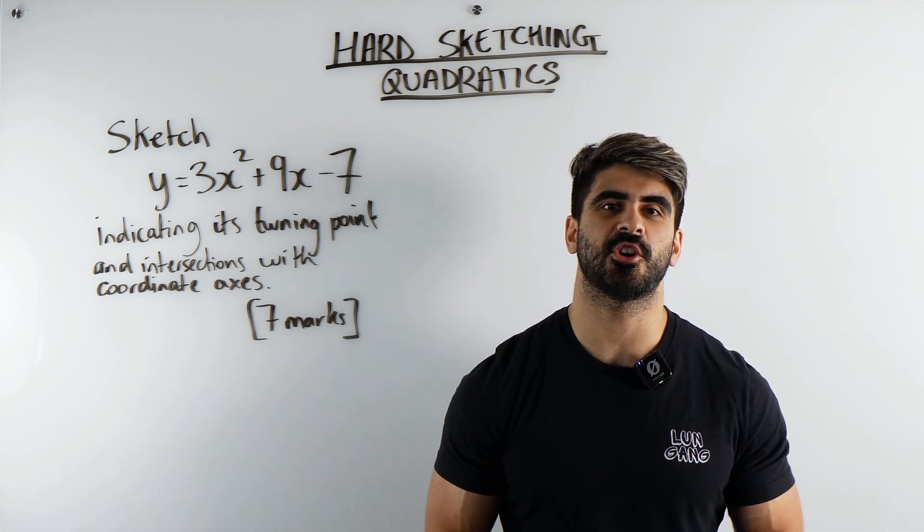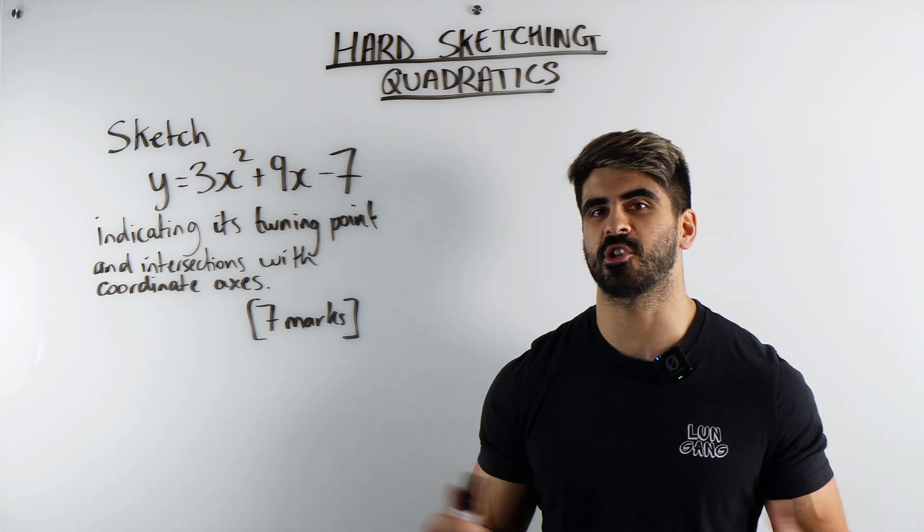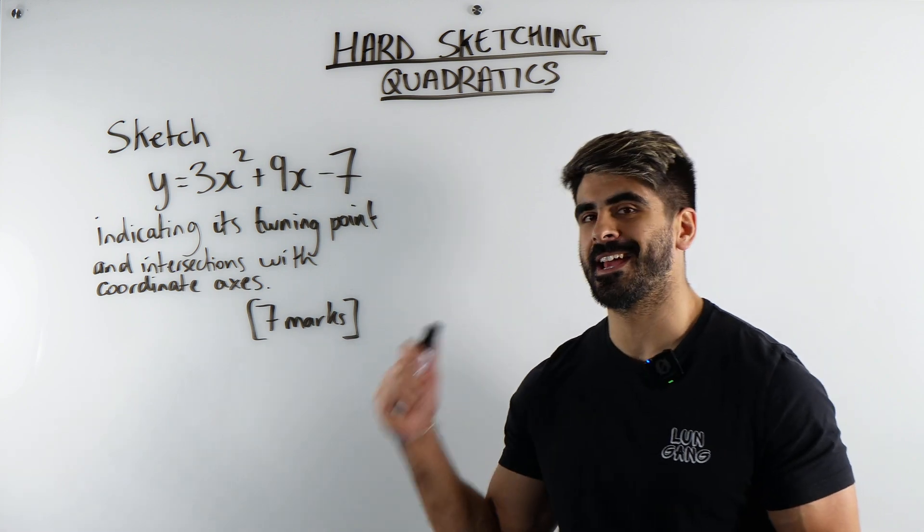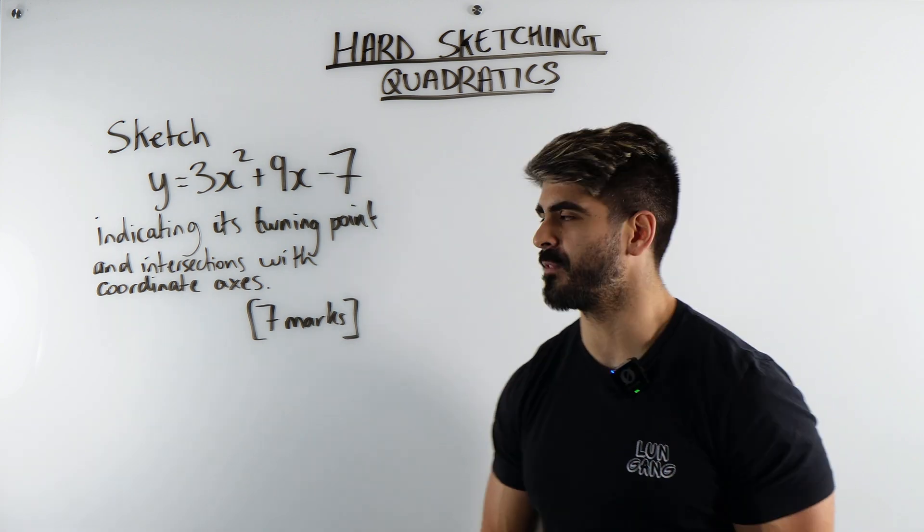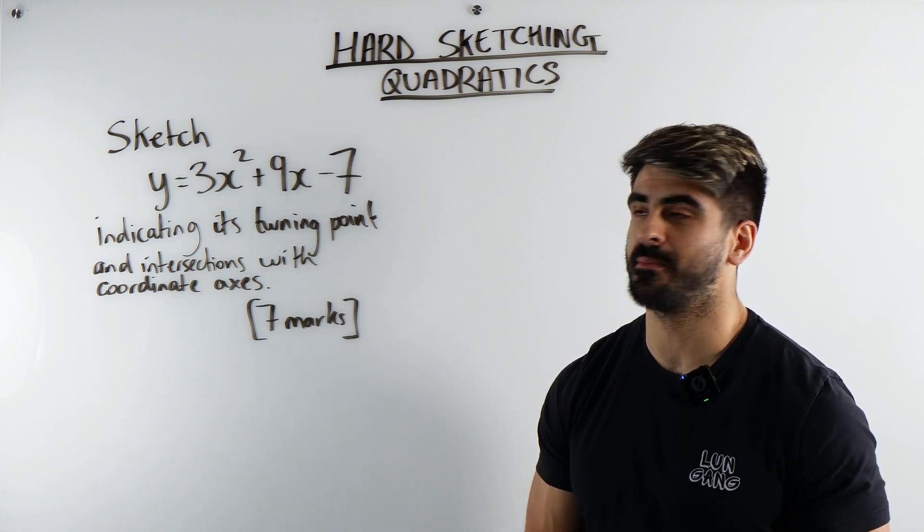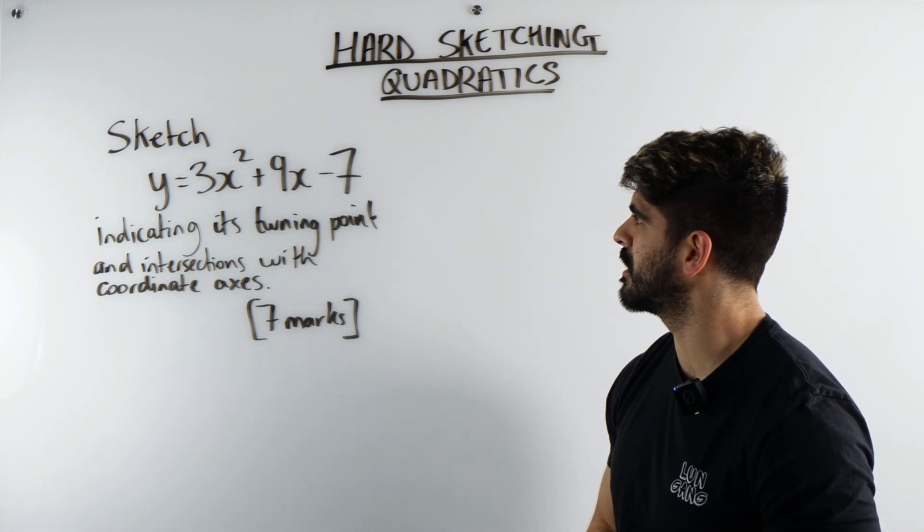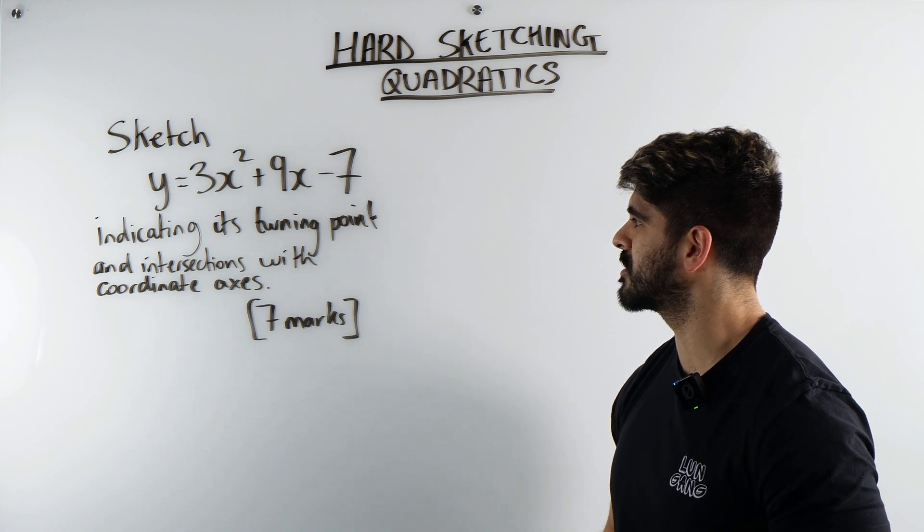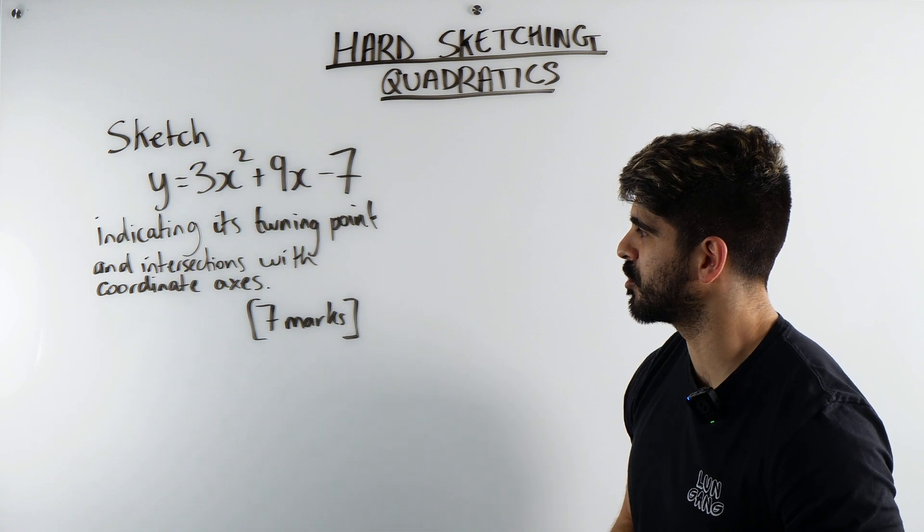This is a 7 marks sketching quadratics question. A question like this can be coming up at the end of your paper, so you can't be fumbling in it. And it would be in a non-calculator paper. It says sketch y = 3x² + 9x - 7, indicating its turning point and the intersections with the coordinate axes.